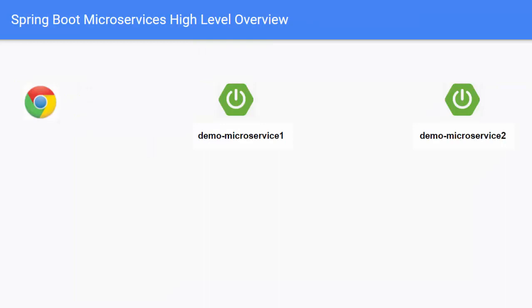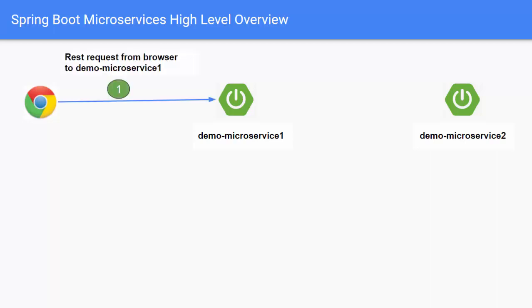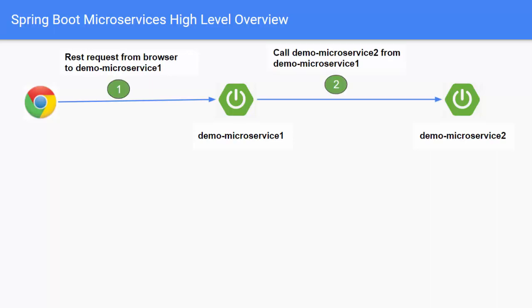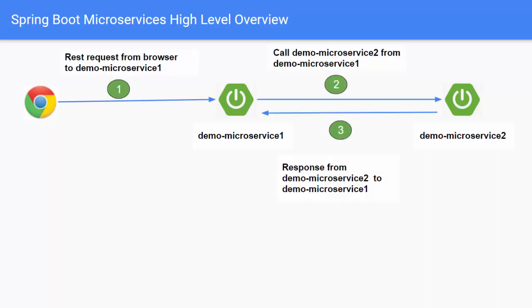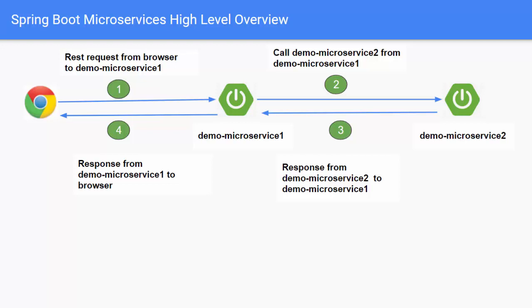Let me provide you a high-level idea of the microservices I am going to use. I have two microservices: demo microservice one and demo microservice two. From the browser, I would send one request to microservice one. Microservice one would call microservice two and get some response, and finally return the response back to the browser. Let me first download the project, set it up in IntelliJ IDEA, and then we will discuss further.